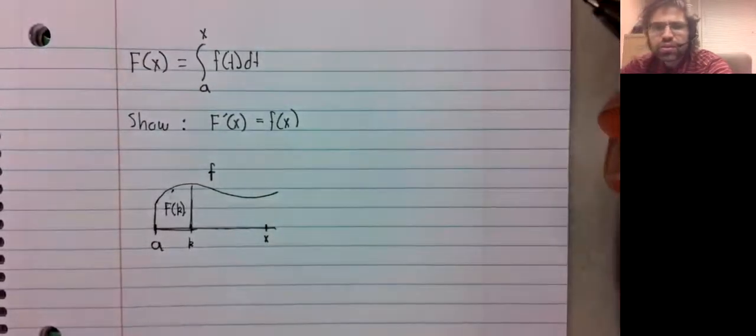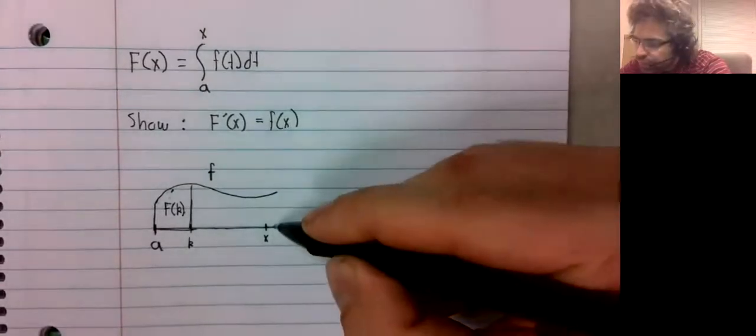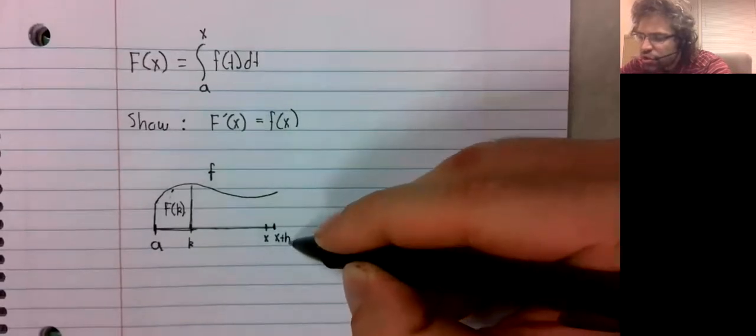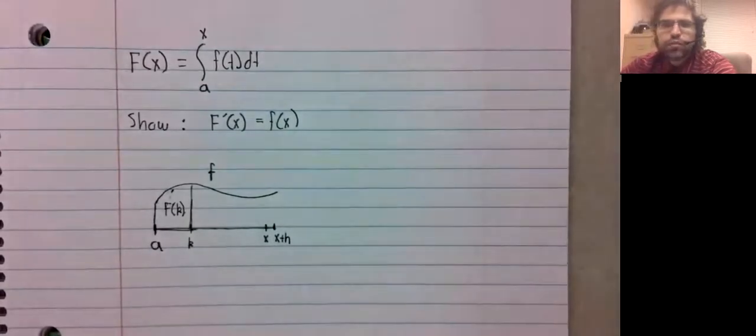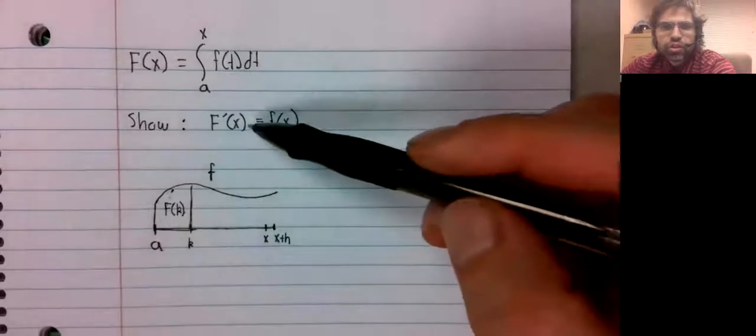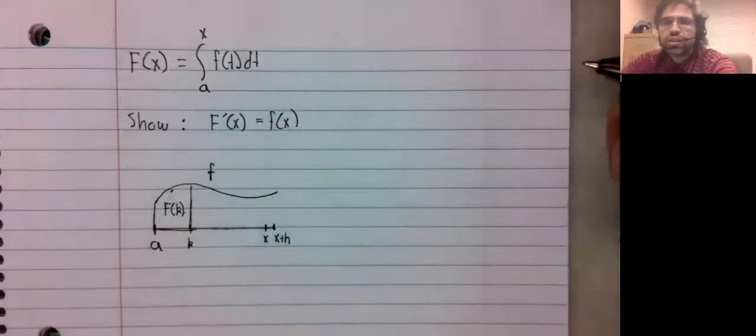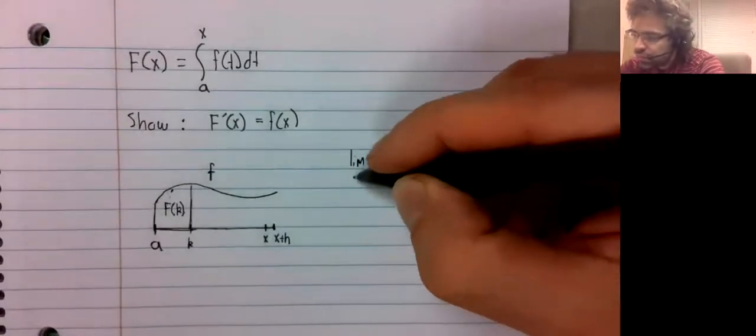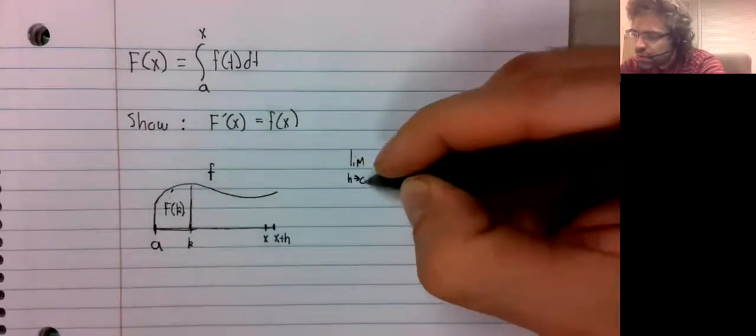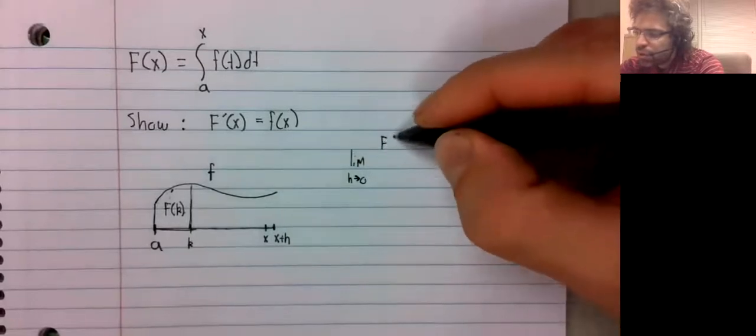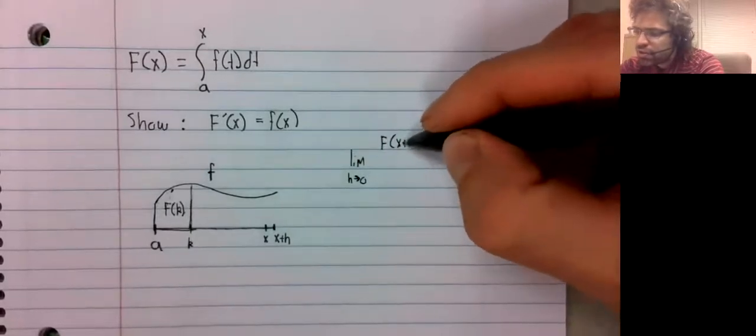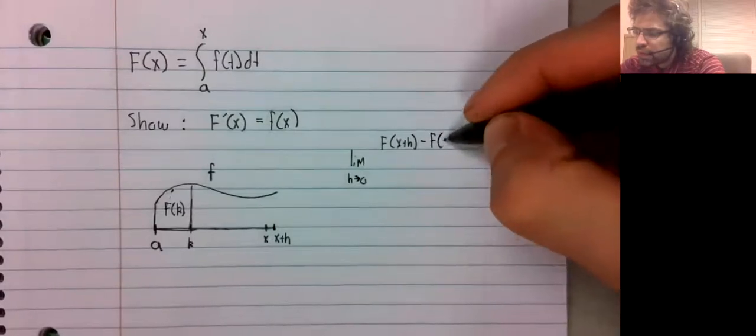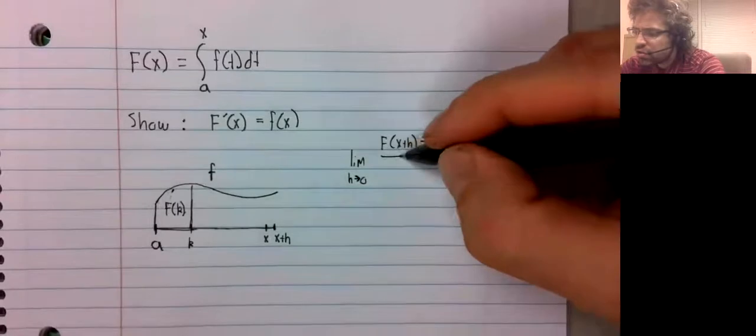Here's X, and here's X plus H. I'm going right from the definition here. I'm going to take the limit as H approaches 0 of capital F of X plus H minus capital F of X.